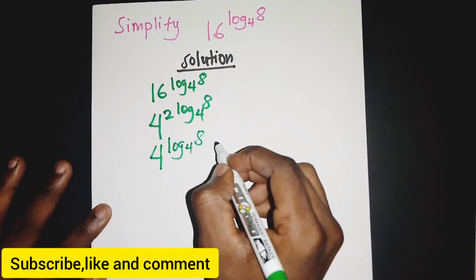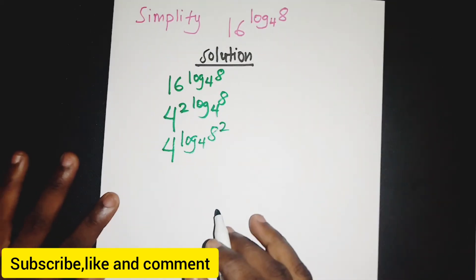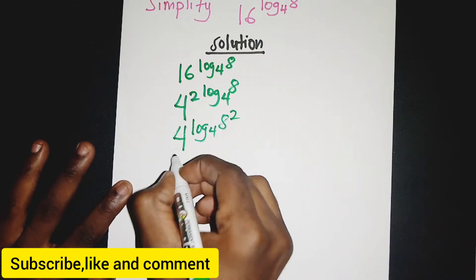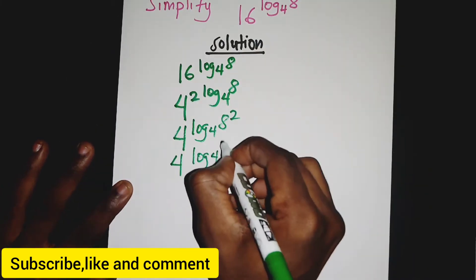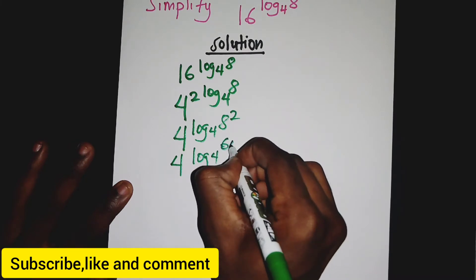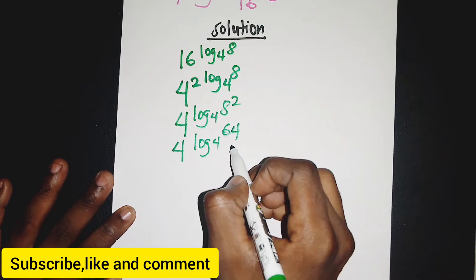8 to the power 2 is just 64, so we have log base 4 of 64. Now what we want to do is make the base here 4 and make it 4 to the power something.